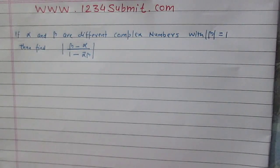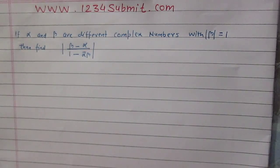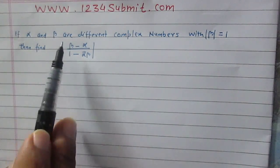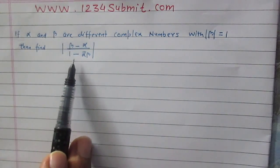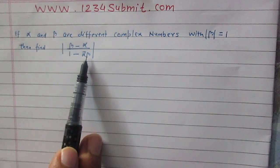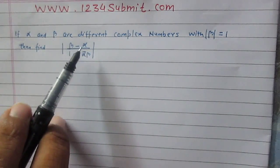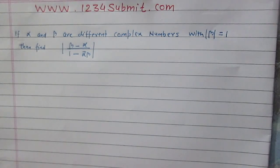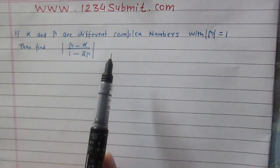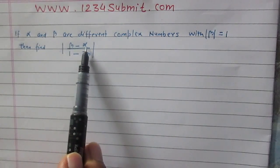In this question we are given two complex numbers alpha and beta. We are also given that the modulus of complex number beta is equal to 1, and we are to find the modulus of a complex number which is beta minus alpha, whole divided by 1 minus alpha conjugate multiplied with beta. We know that beta and alpha are both complex numbers, so the difference of two complex numbers is a complex number — in this way, beta minus alpha is a complex number.